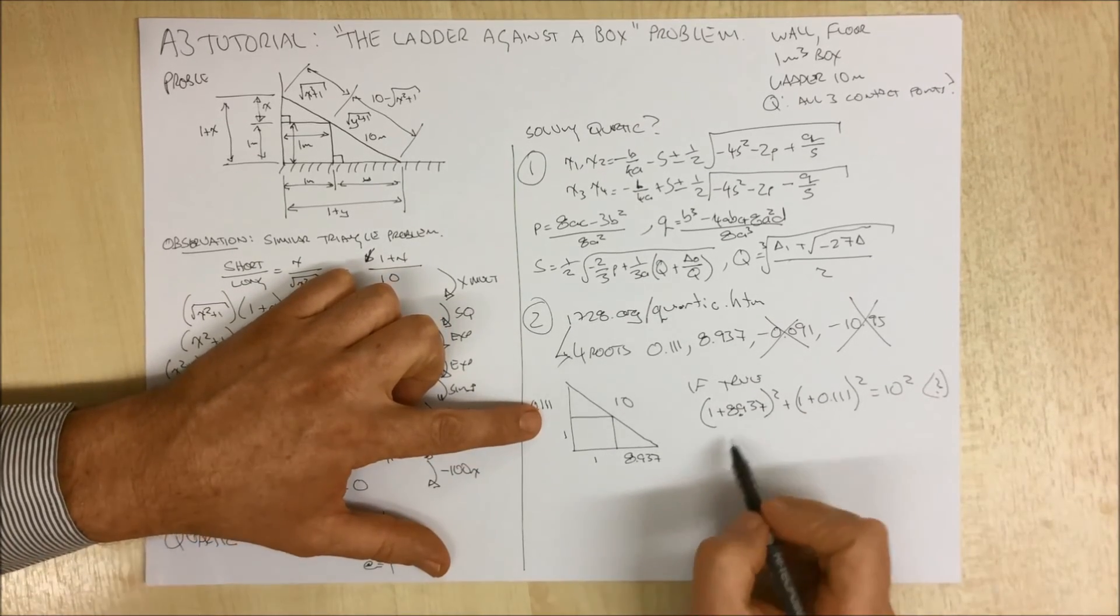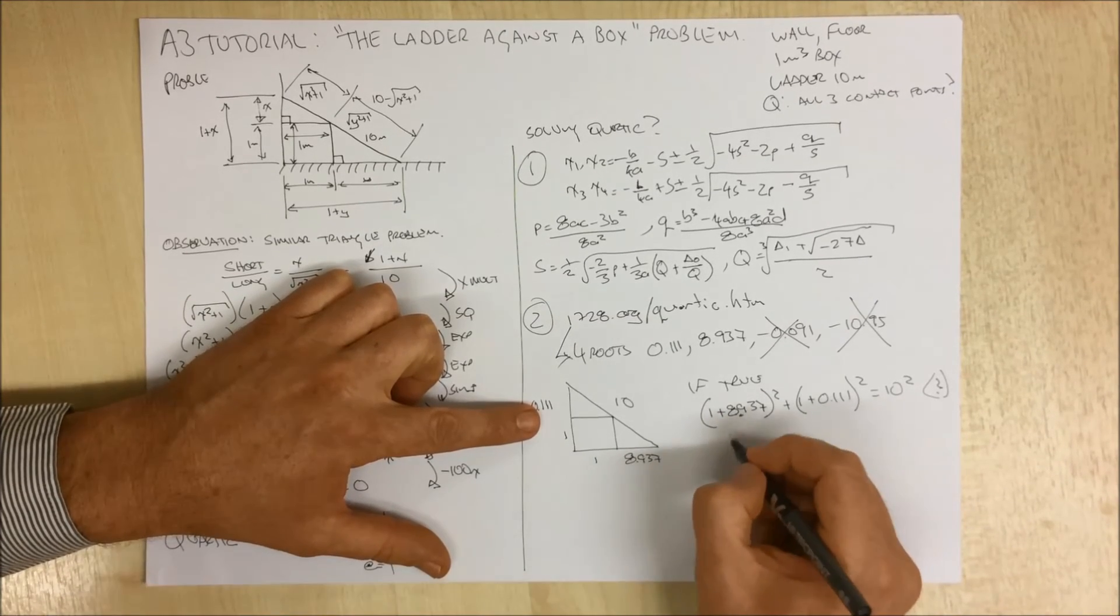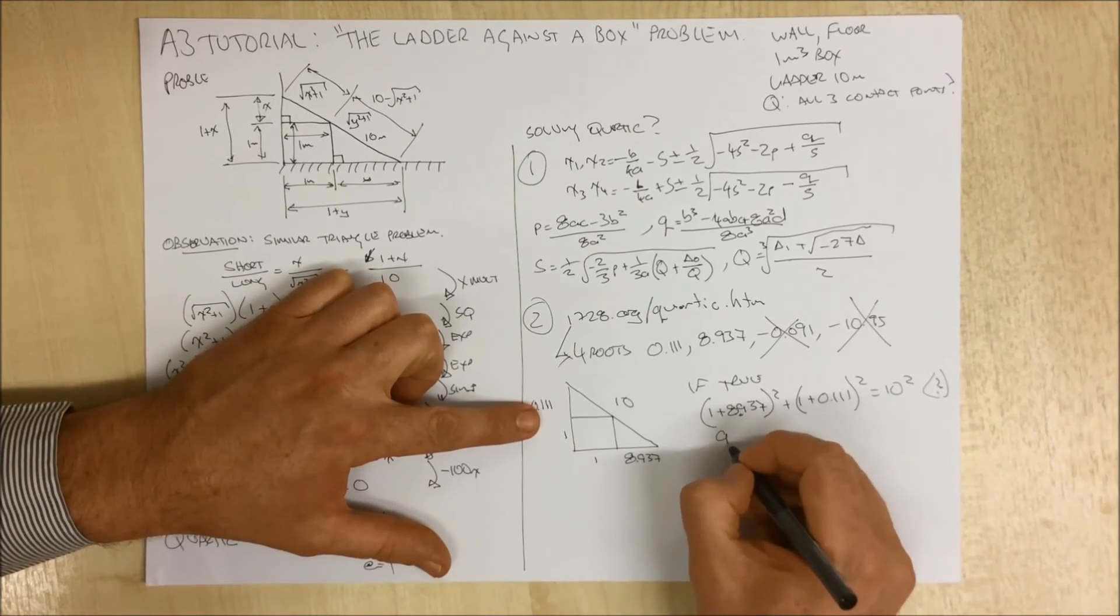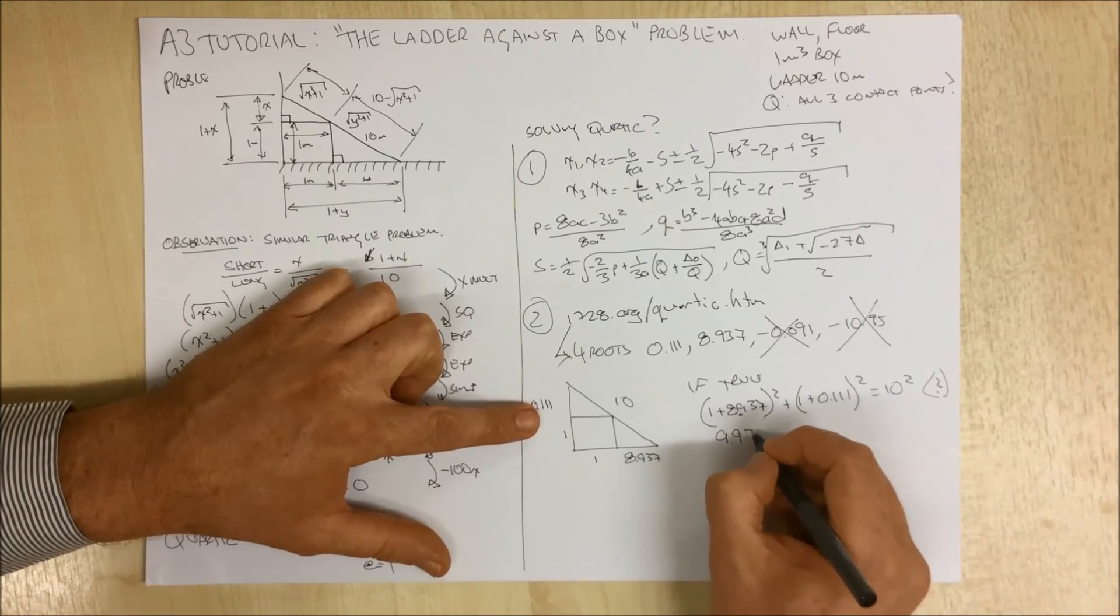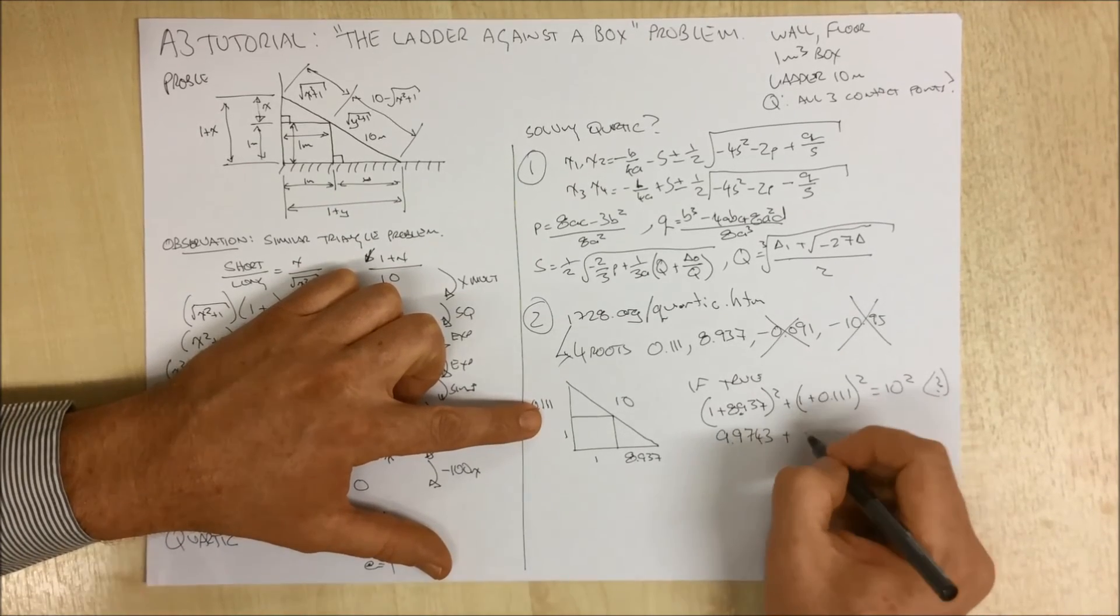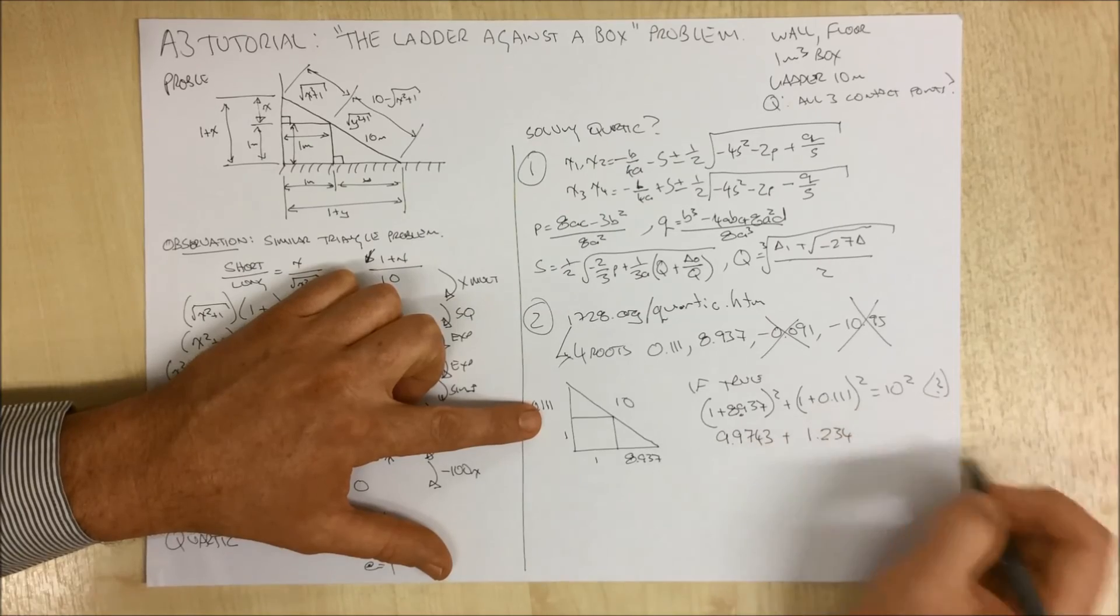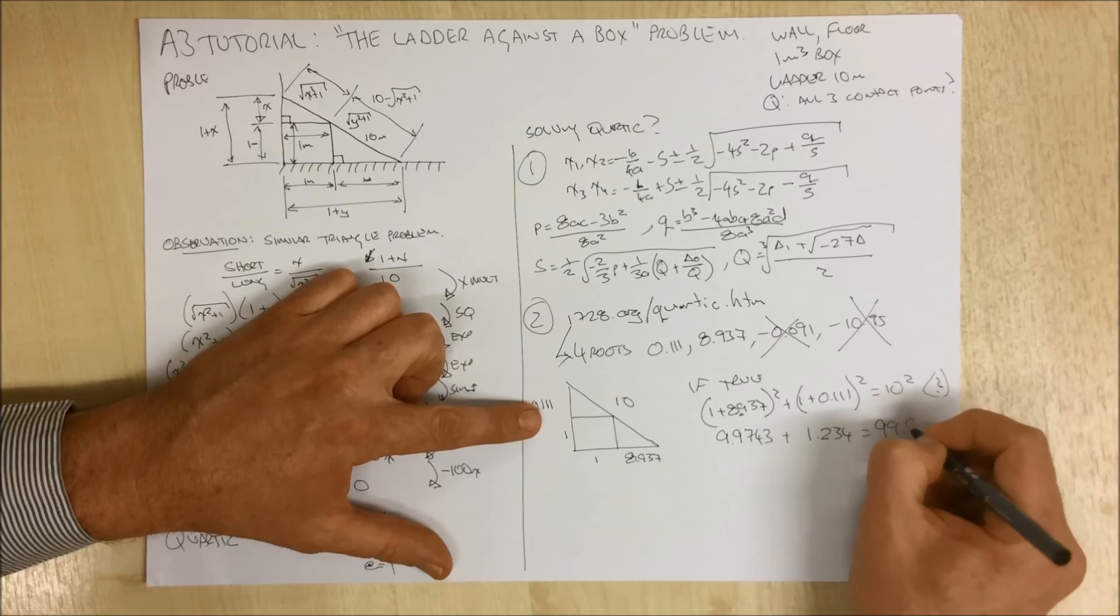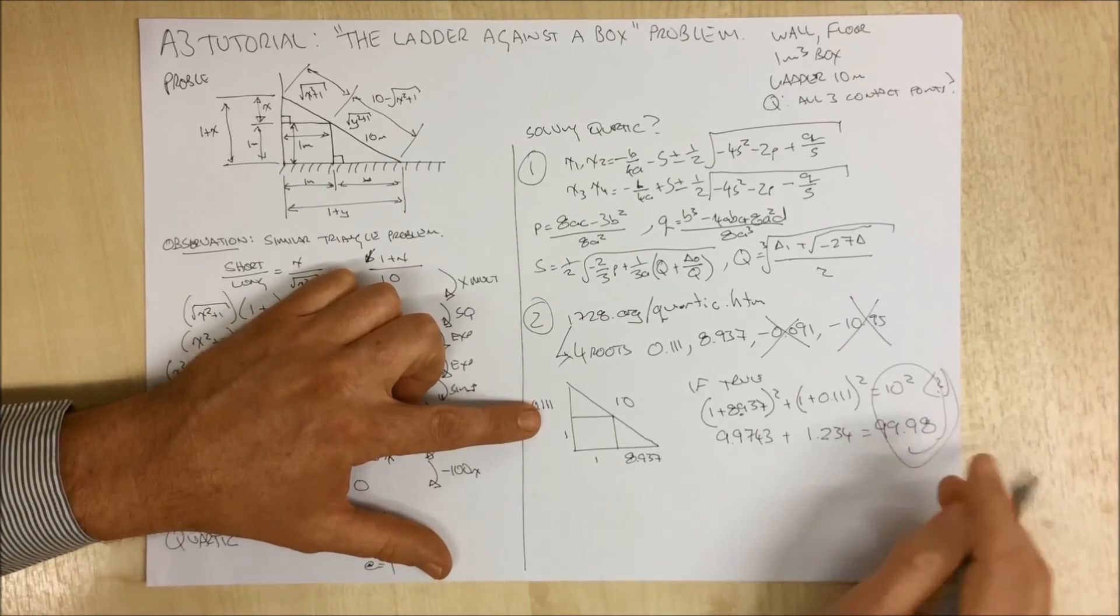If this is true, then we know that 1 plus 8.937 squared plus 1 plus 0.111 squared should equal 10 squared if this is true. So we'll see if that does. We can simply punch these numbers there. And we know that this here will come out to be 99.48. And 1 plus 0.111 squared comes to be 1.234. And that equals 99.98, which in my book is pretty close.